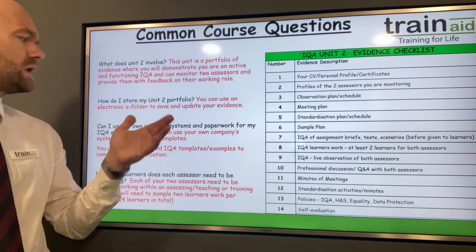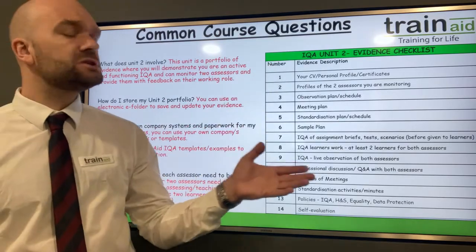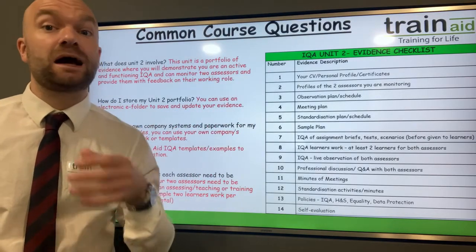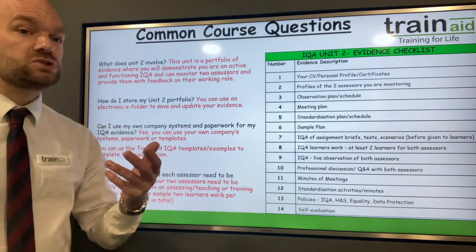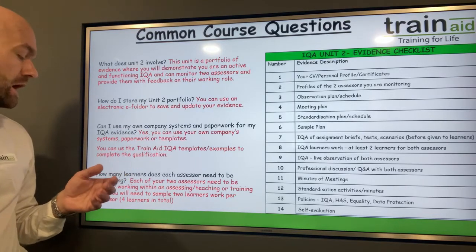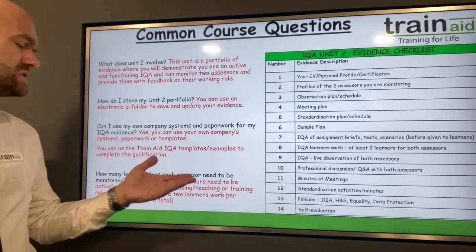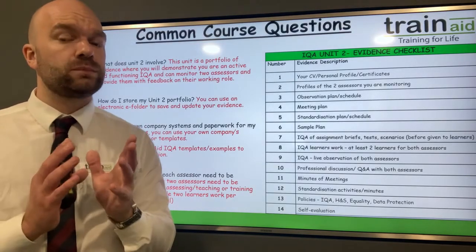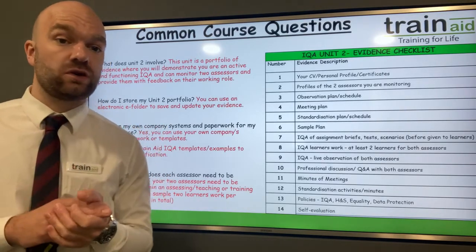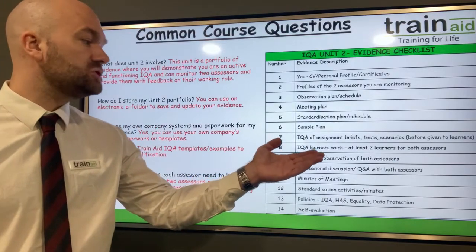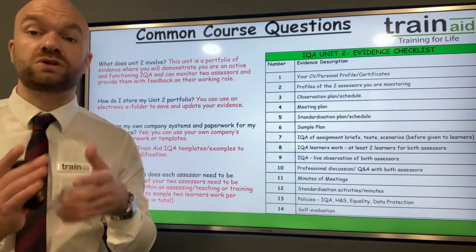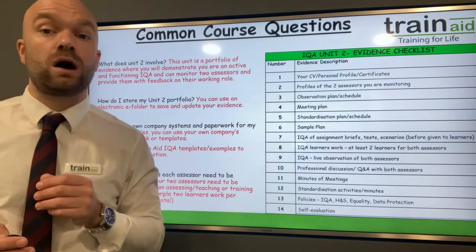In terms of how to store your Unit 2 portfolio, it is saved electronically by you and you can send in your evidence to receive feedback at any point. You can use your own systems, paperwork and templates. In terms of how many learners each assessor needs to be monitoring — each of your two assessors needs to be monitoring a minimum of two learners each, as you will need to examine written feedback from the assessors to the learner, such as sampling the assessor's marking of learner work.